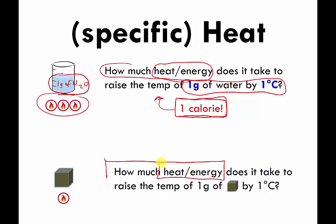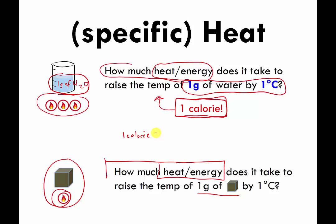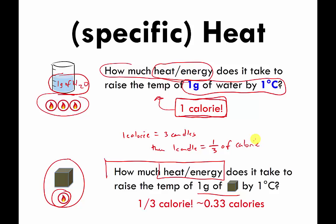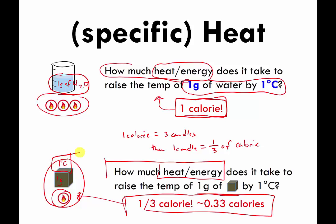So how much energy does it take to raise the temperature of one gram of my metal by one degree Celsius? In my pretend example, one calorie equals three candles, so one candle is equal to one third of a calorie. Apparently in my pretend example, it takes one third of a calorie to raise the temperature of one gram of my pretend metal by one degree Celsius.